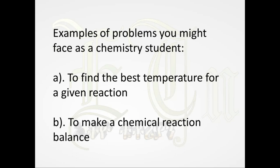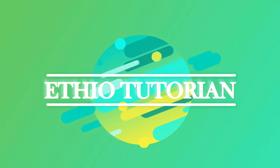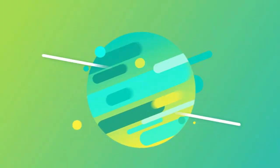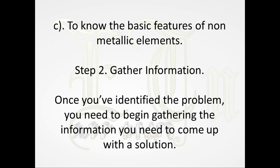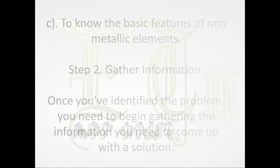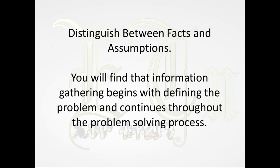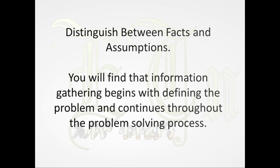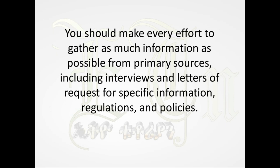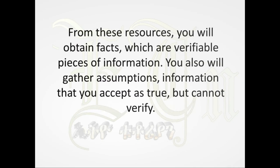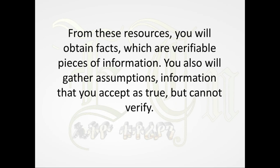Examples of problems a chemistry student might face: (a) to find the best temperature for a given reaction, (b) to make a chemical reaction balance, (c) to know the basic features of non-metallic elements. Step 2 — gather information: once you've identified the problem, begin gathering the information needed to come up with a solution. Distinguish between facts and assumptions. Information gathering begins with defining the problem and continues throughout the problem solving process.